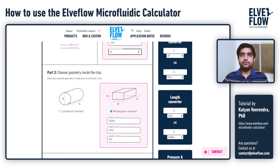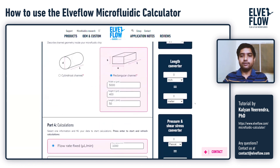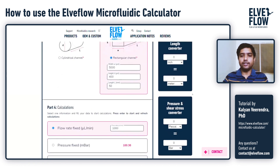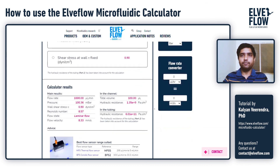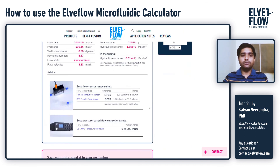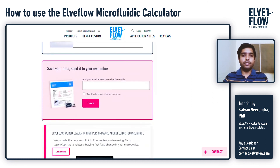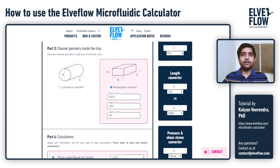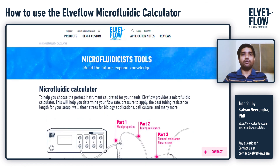At all times, you can use the unit converters next to the calculator to convert viscosity, length, pressure, or shear stress. The calculator also gives recommendations on flow sensors and pressure-driven flow controllers in the L-flow product range. Finally, you can save your data and send it to your inbox. That concludes our tutorial on how to use the L-flow online microfluidic calculator. We hope you enjoy using it and that it helps you set up your microfluidic experiments. Good luck with your experiments!